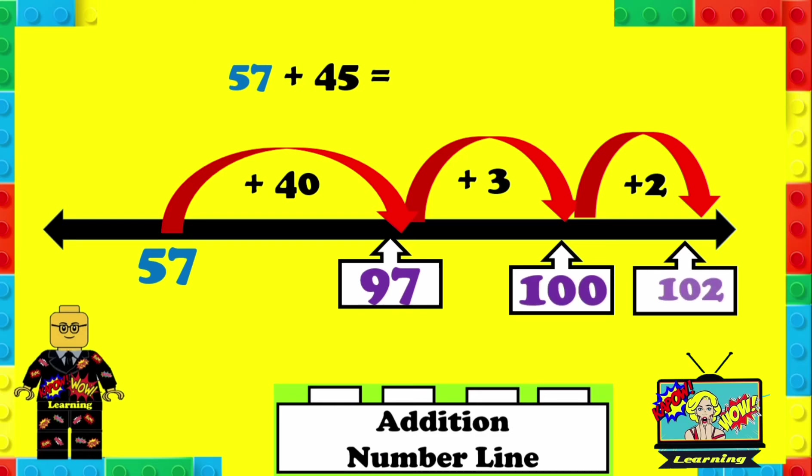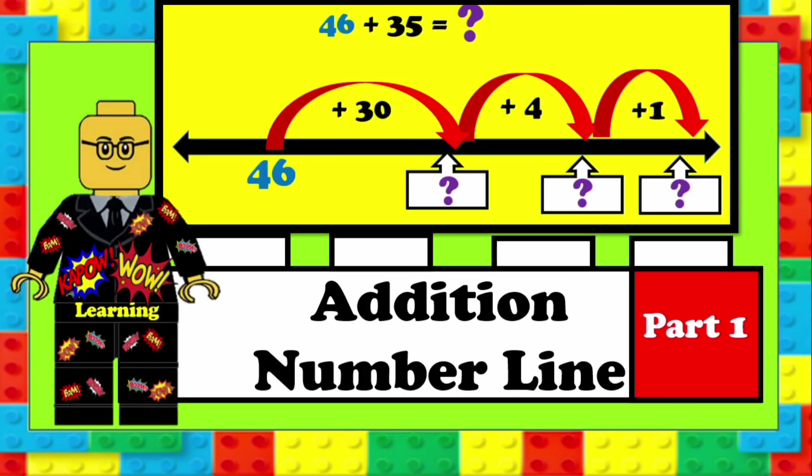100 plus the 2, so the answer is 57 plus 45 equals 102.